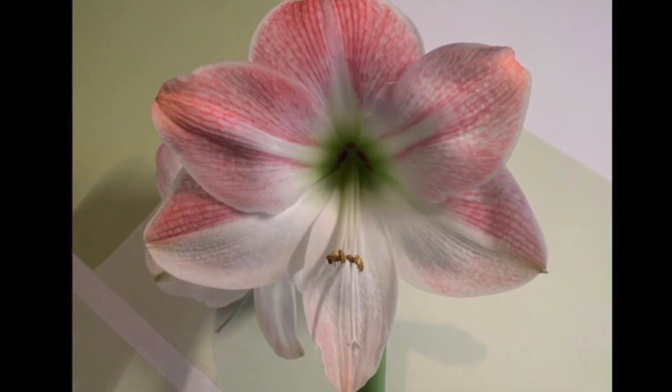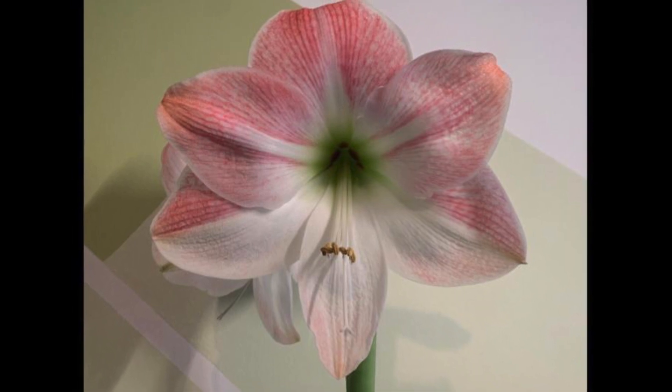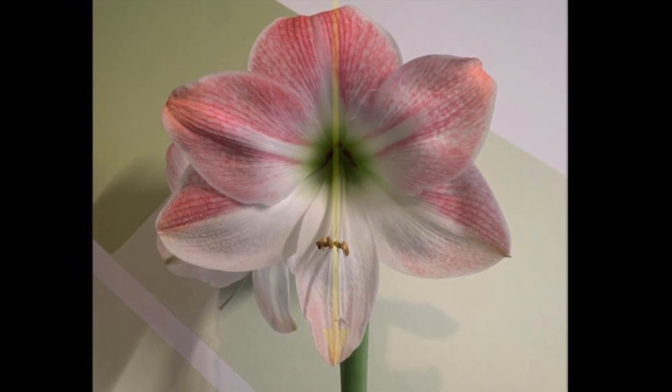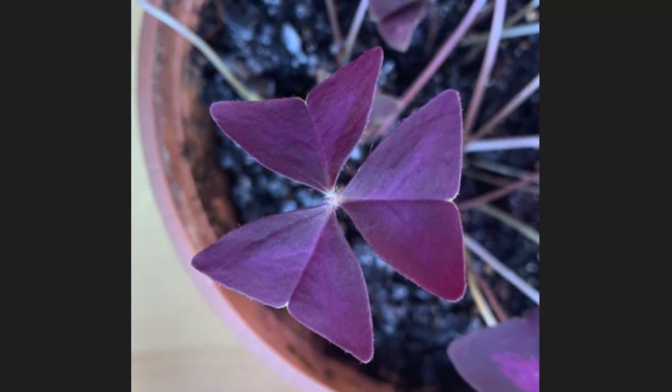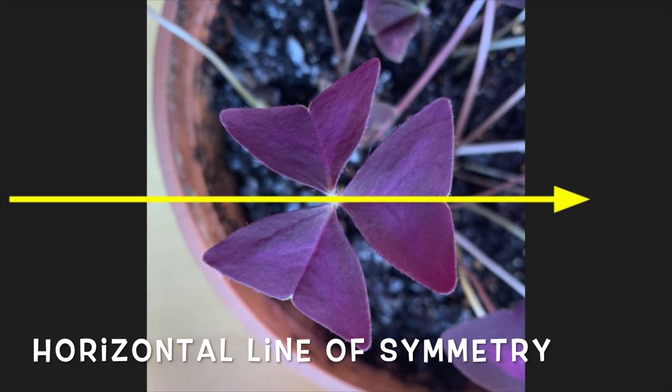Let's begin by reviewing the idea of symmetry. Symmetry is when you divide an object down the middle and observe that it is the same on both sides. Lines of symmetry can be vertical, straight up and down, or they can be horizontal, side to side.